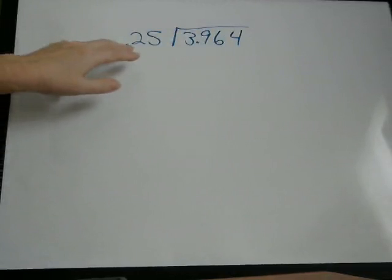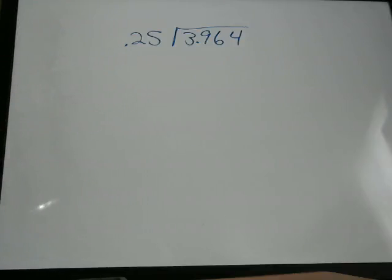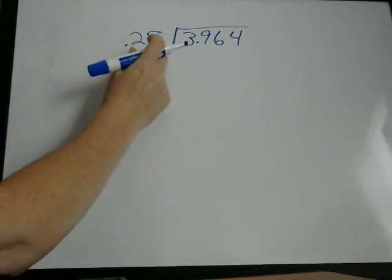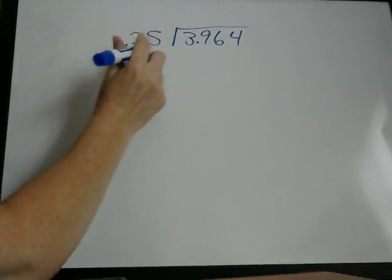Well, when we're doing long division, we can't have a decimal out here. We can't divide by a decimal. So we're going to move this decimal point to the right as many times as it takes to get a whole number.